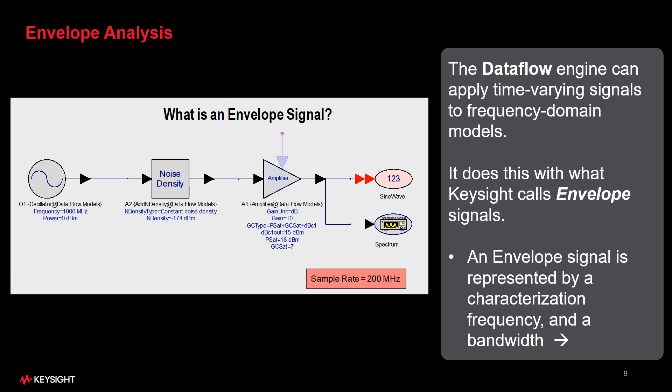To understand envelope mode in the data flow engine, consider this 1000 MHz source, followed by a noise density to add a realistic noise floor, followed by a single non-linear amplifier model, and then a scope and a spectrum analyzer to capture the output.